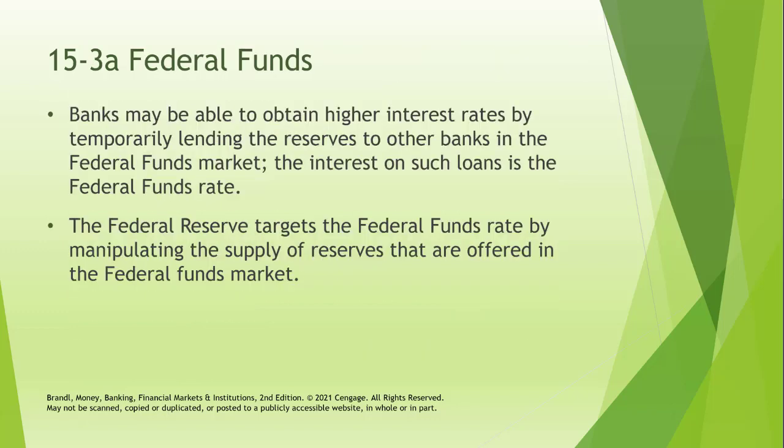The federal funds market is in fact part of the money market. It's where banks buy, sell, loan, and borrow money in order to fulfill their minimum reserve requirements. Banks may obtain higher interest rates by temporarily lending reserves to other banks in the federal funds market. The interest on such loans is the fed funds rate, and the Fed targets this rate by manipulating the supply of reserves in the federal funds market.